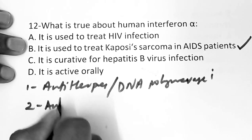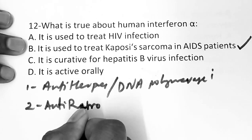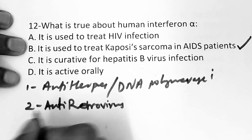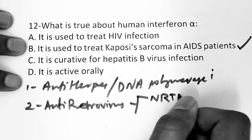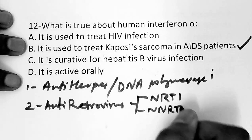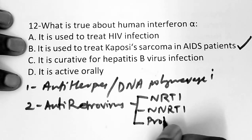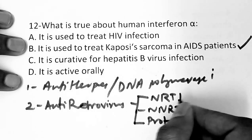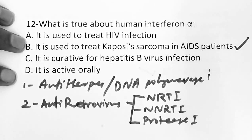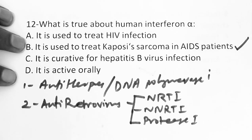The second category is antiretrovirus drugs. These are further classified into: NRTIs (nucleoside reverse transcriptase inhibitors) — examples: zidovudine, didanosine, zalcitabine, stavudine, lamivudine, abacavir; and NNRTIs (non-nucleoside reverse transcriptase inhibitors) — examples: nevirapine, efavirenz. The third sub-class is protease inhibitors.